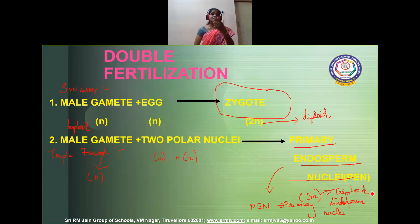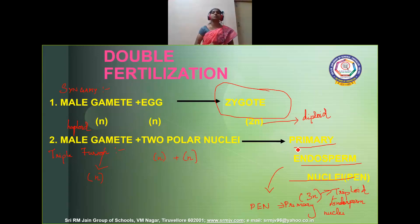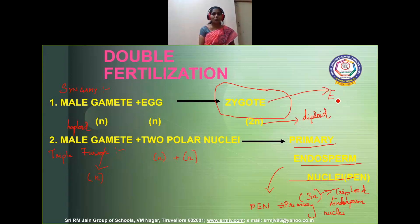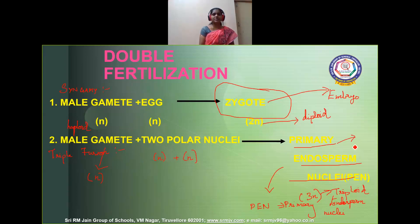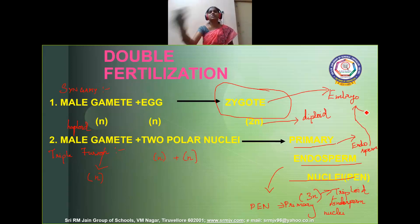This primary endosperm nucleus is triploid in nature. These are the things which are going to enter into our third phase of sexual reproduction — that is post-fertilization events. This zygote is going to develop into embryo — the baby plant. And this primary endosperm nucleus is going to develop into a structure called endosperm. Endosperm is a nurturing tissue for the growing embryo, providing nutrients for the development of embryo from zygote.